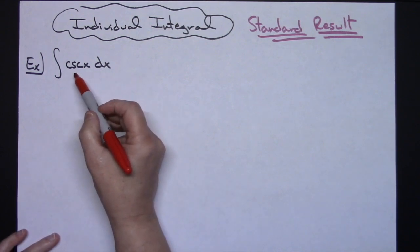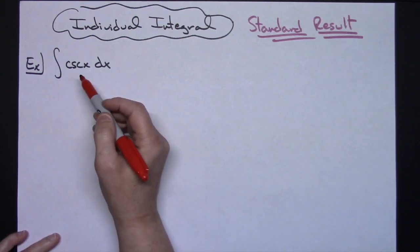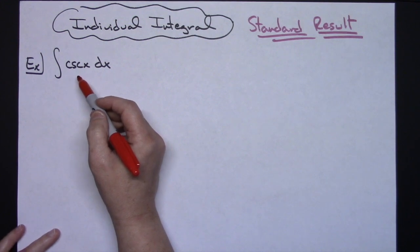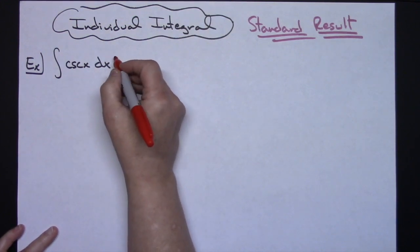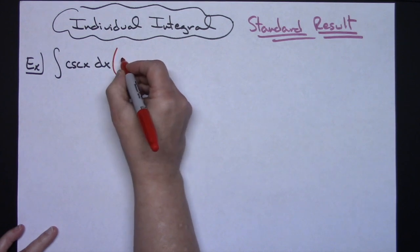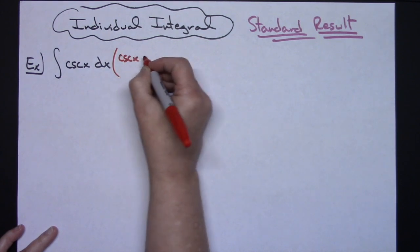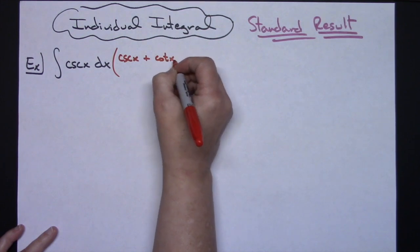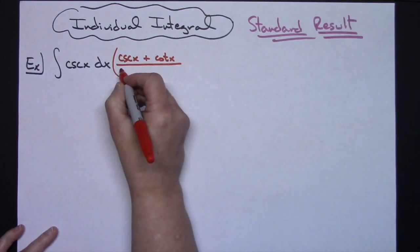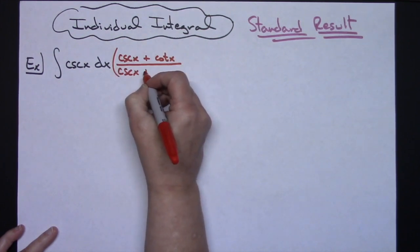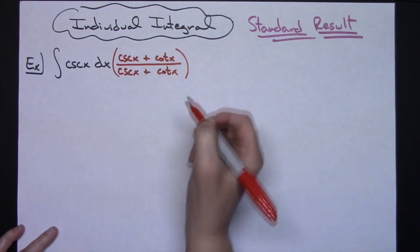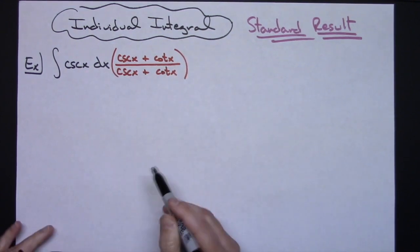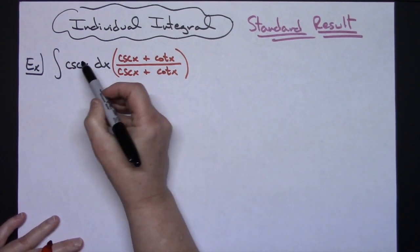The trick that makes this a nice easy u substitution is to choose to multiply by a form of 1. I'm going to choose my form of 1 being cosecant x plus cotangent x. As long as I multiply by a form of 1, I am not changing that original function at all. That's the trick — I'm going to choose to multiply by that form of 1.